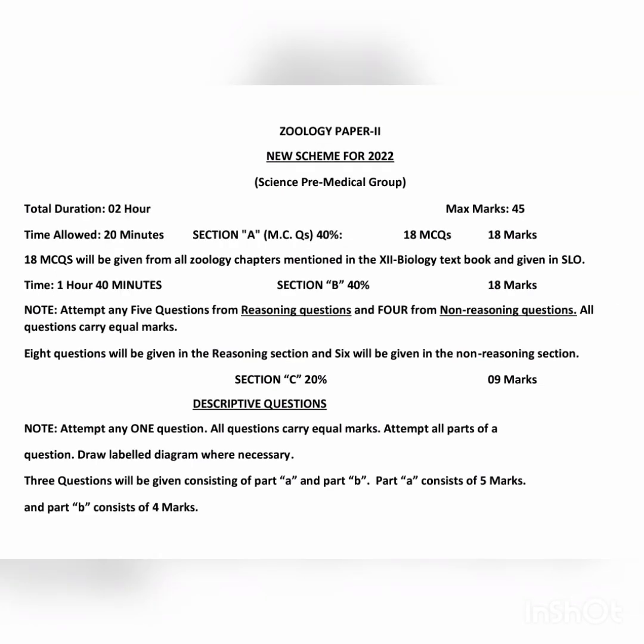In Botany 2 you have 40 marks total. The last paper is Zoology 2, which has 45 marks. MCQs are worth 18 marks, each having one mark. Section B is worth 18 marks, with reasoning and non-reasoning questions. The descriptive portion is worth nine marks — one question with Part A worth five marks and Part B worth four marks.